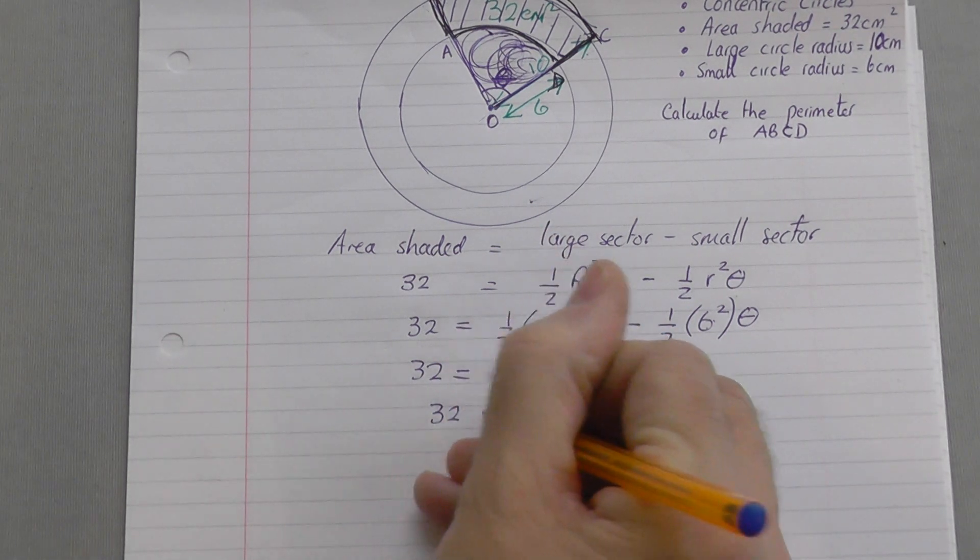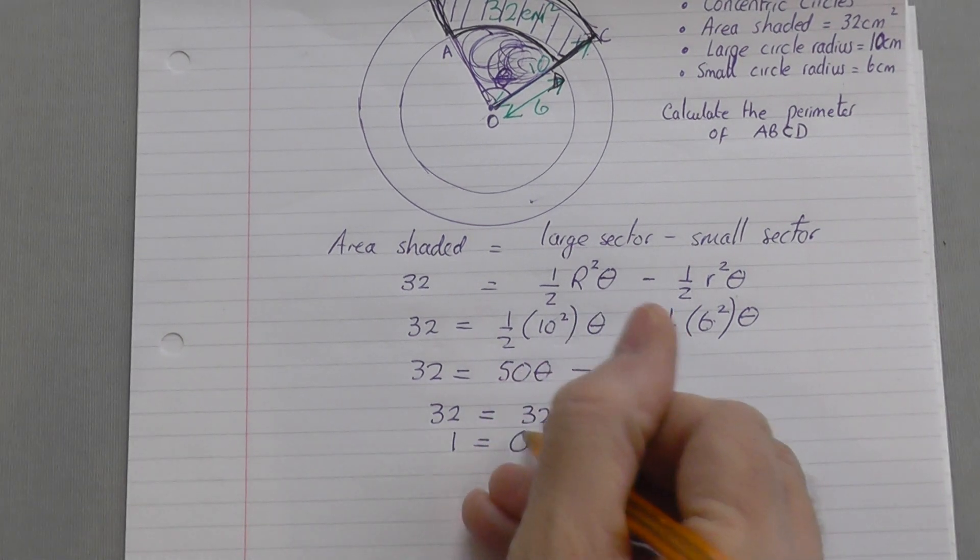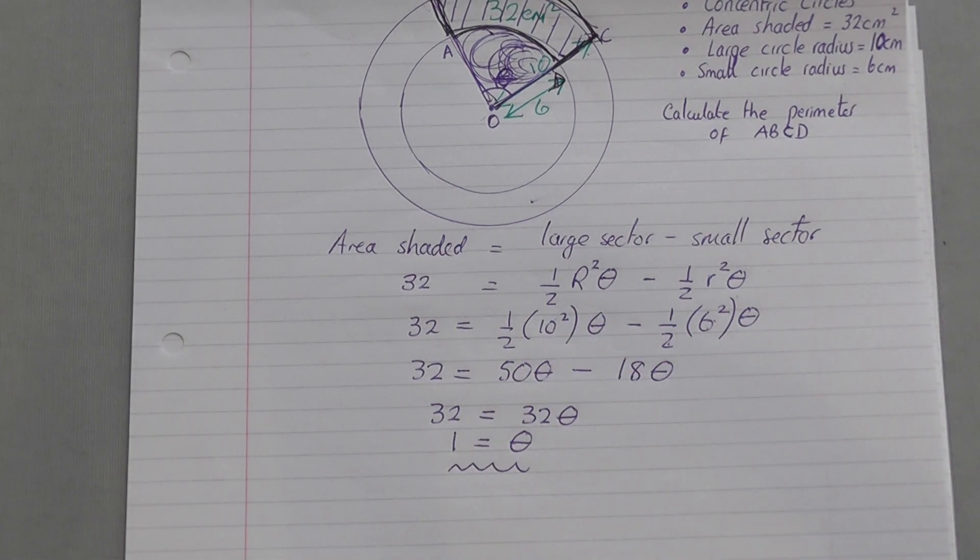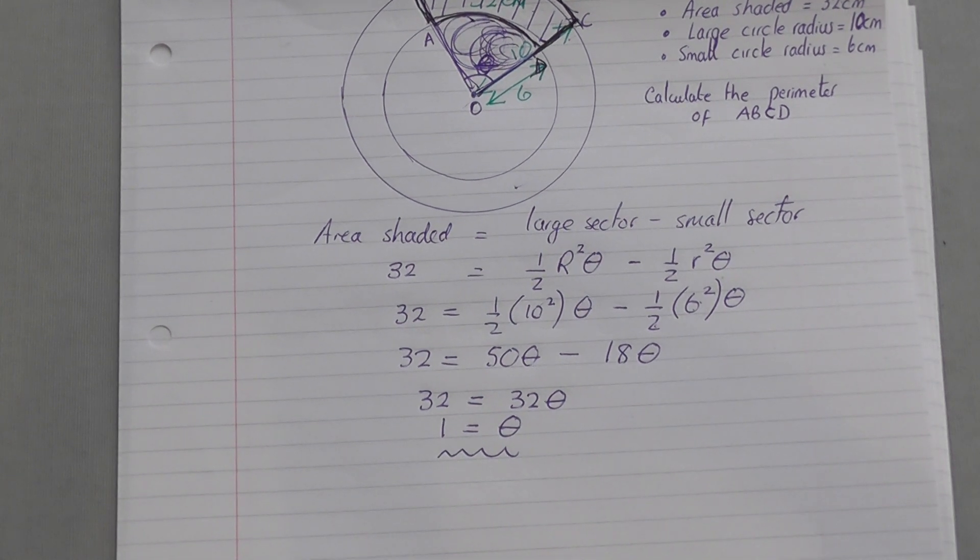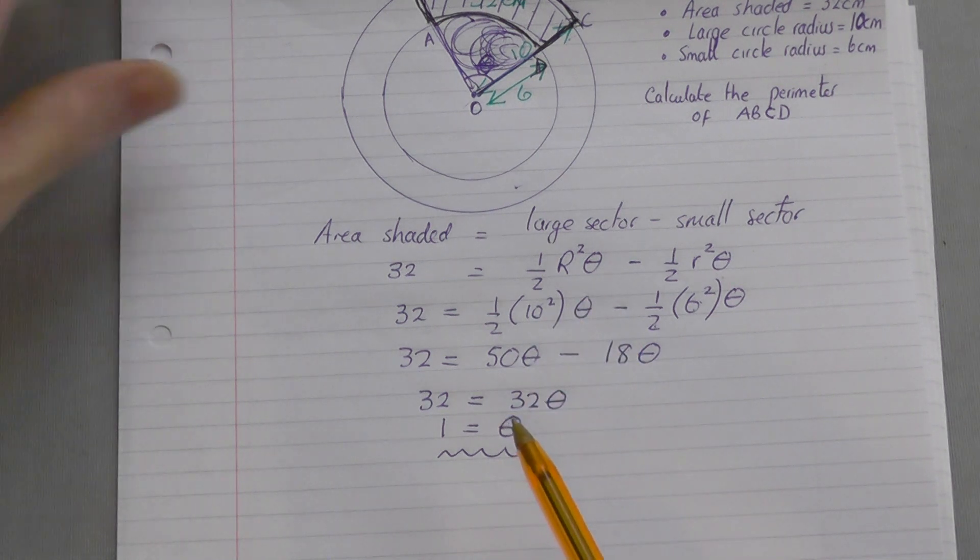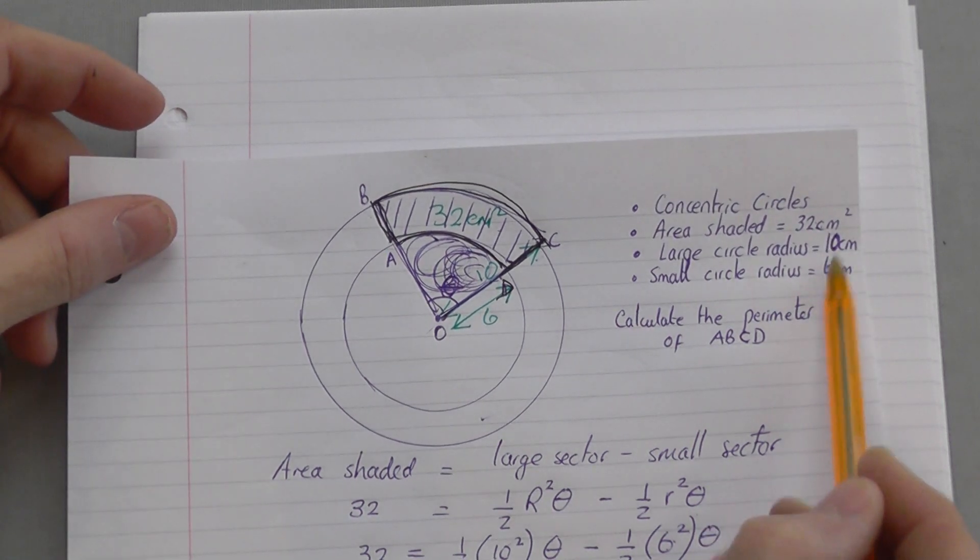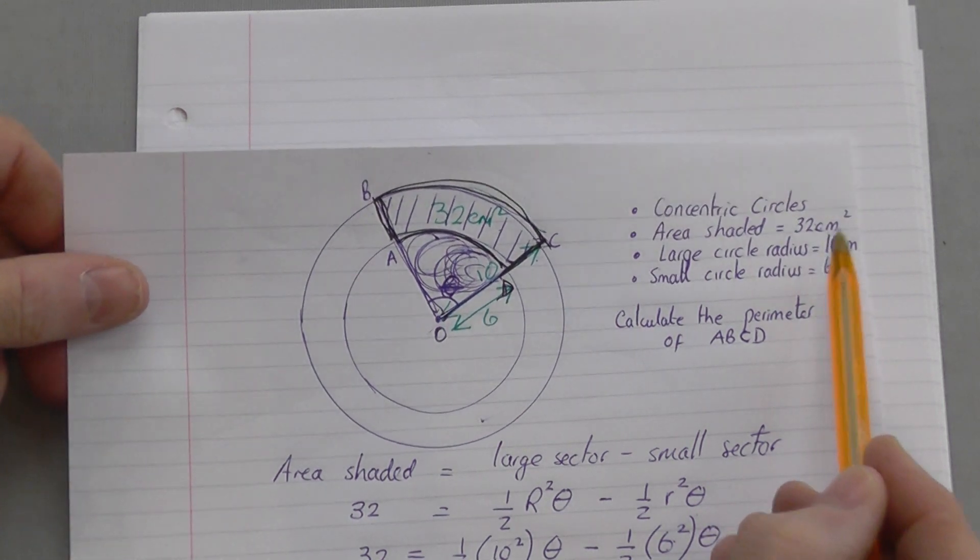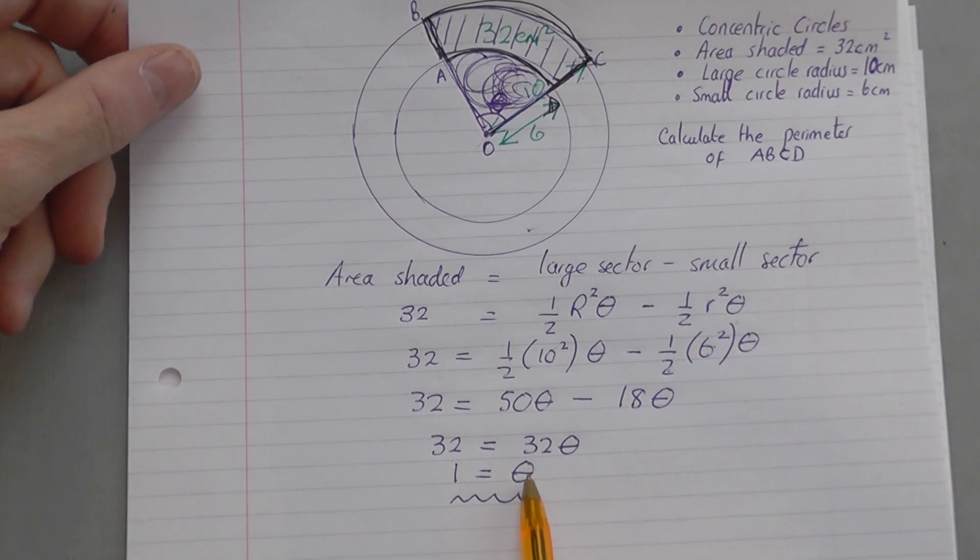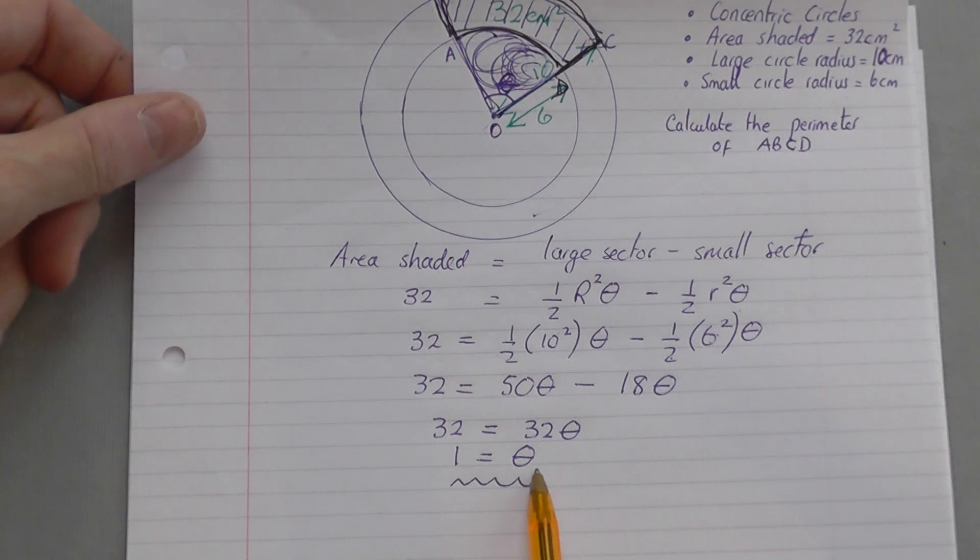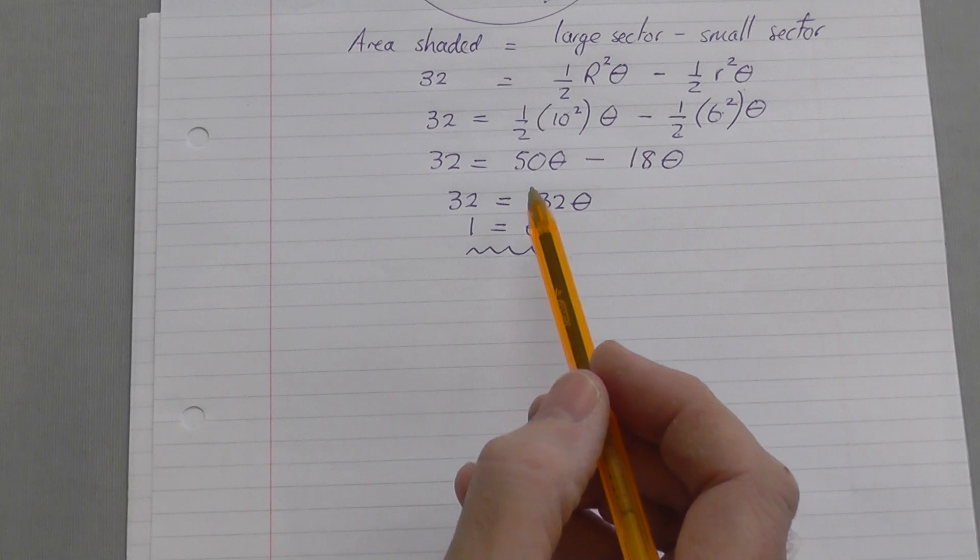So we end up with 32 equals 32 theta. Divide by 32 and you get a nice convenient answer that theta must be 1 radian, which is about 57 degrees. So the area shaded to be 32, together with these radius figures, enable you to work out that the angle at the center was 1 radian. Now I know that, I am going to be able to work out the perimeter of that shape.